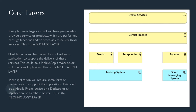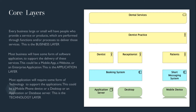Most applications will require some form of technology to support the application. This could be a mobile phone device, a desktop, an application or a database server. This is the technology layer. In our example, the booking system is a desktop application with an application server that can allow all staff to view appointments. And we have the expectation that patients will receive text notification to confirm appointments from a mobile device.